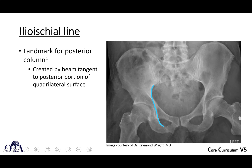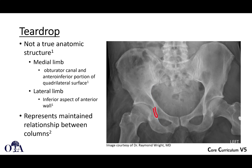The ilioischial line, shown here in blue, is created by a beam tangent to the posterior portion of the quadrilateral surface. It forms a portion reaching down toward the inferior pubic ramus and superiorly toward the sciatic notch, but the majority represents the quadrilateral surface. It is a good marker for the posterior column.